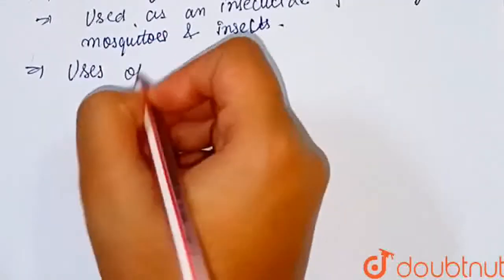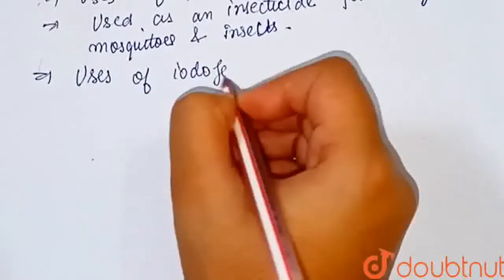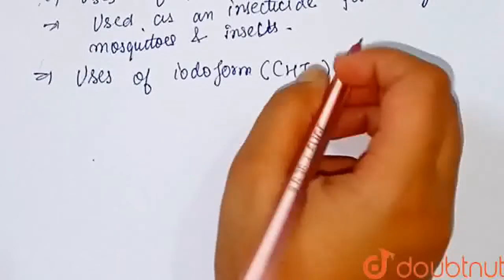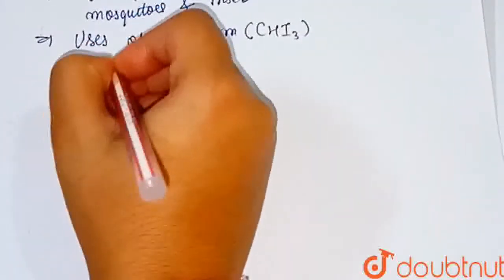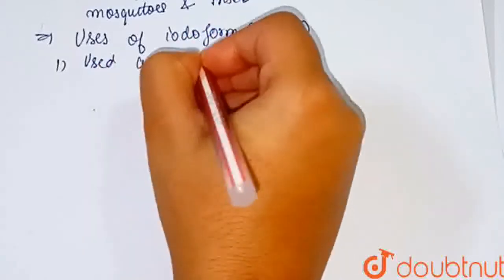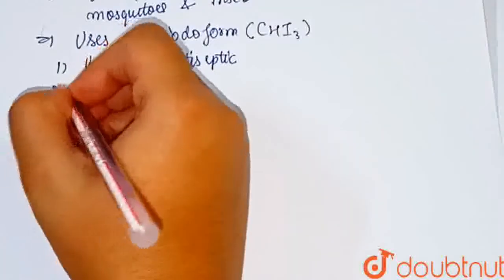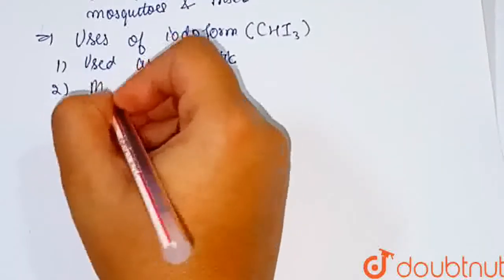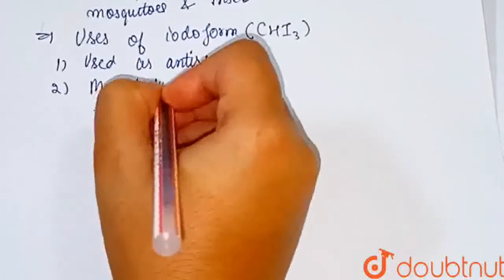Uses of iodoform which is CHI3. It is used as antiseptic and in the manufacture of pharmaceuticals.